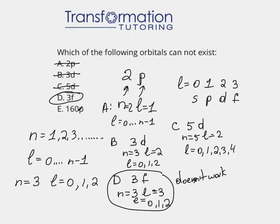Now, let's just take a look at e, which is 160p. n is equal to 160 here, and l, if it's p, is equal to 1. Could that happen? Yes, because my l can go from 0 all the way to 159. Any of those numbers will work out, and 1 is one of them. So that works out, and e we can eliminate as well.